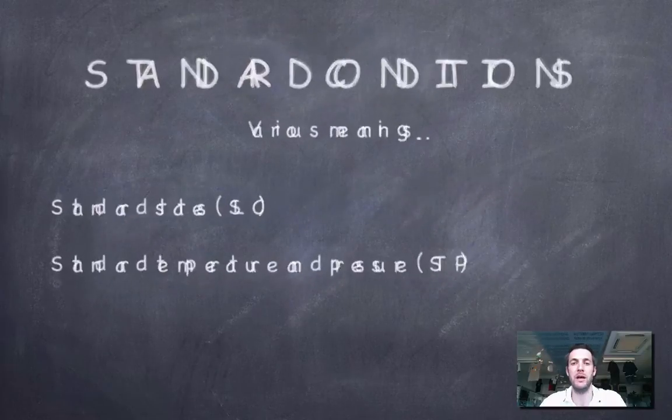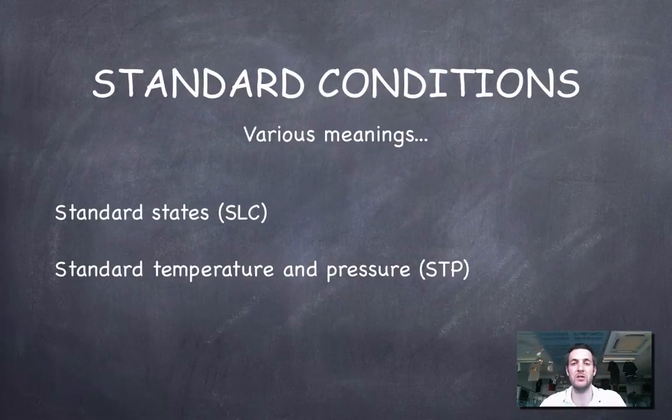Now, if we're talking about standard enthalpy changes, it's important to know what we mean by standard, and there are various meanings of standard conditions. If we're talking about standard laboratory conditions, so that's materials in their standard states, we're talking about a temperature of 25 degrees centigrade or 298 Kelvin, and a pressure of 1 atmosphere or 101.3 kilopascals. This is different to standard temperature and pressure, which is confusing, but it's worth bearing in mind.